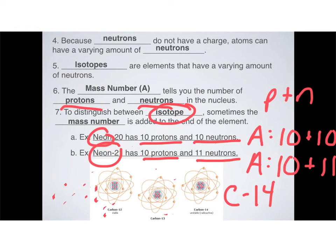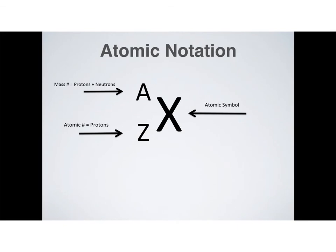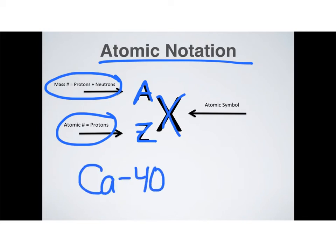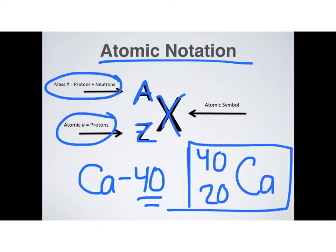Here's our summary slide for atomic notation. In order to express mass number, atomic number, and other information, we use atomic notation. We write the mass number — the number of protons and neutrons — in the upper left-hand corner as a superscript. The atomic number, abbreviated Z, goes in the lower left-hand corner. Then of course you have your atomic symbol from the periodic table. For example, calcium-40: the mass number is 40, the atomic number of calcium is 20, and the symbol is Ca.